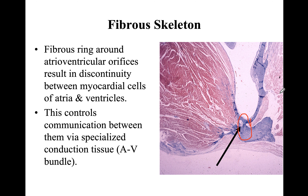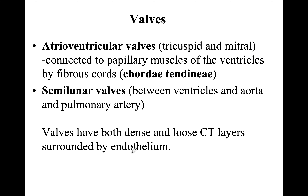The only connection between the atrium and ventricles is through the bundle of His, which is responsible for transmission of impulses inside the heart. Regarding valves, the atrioventricular valves are found between the right and left atrioventricular openings. We have the papillary muscles and chordae tendineae connecting the papillary muscles to the valves. The valves have both dense and loose connective tissue layers and are surrounded by endothelium — similar to the valves seen in veins.